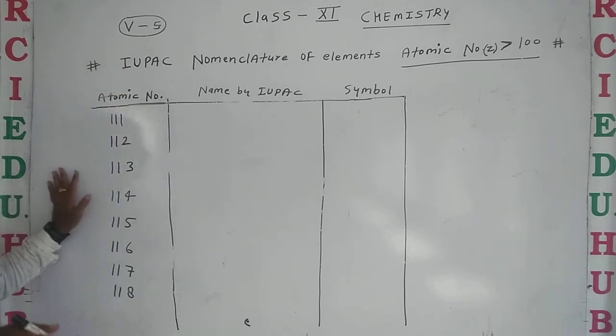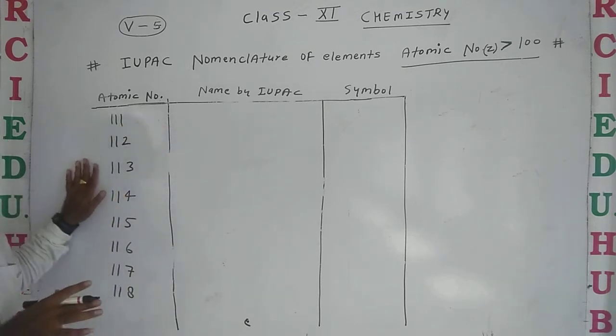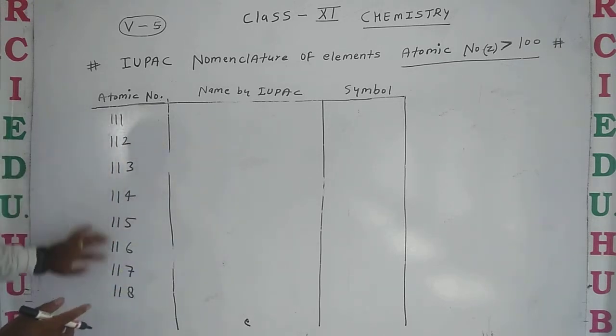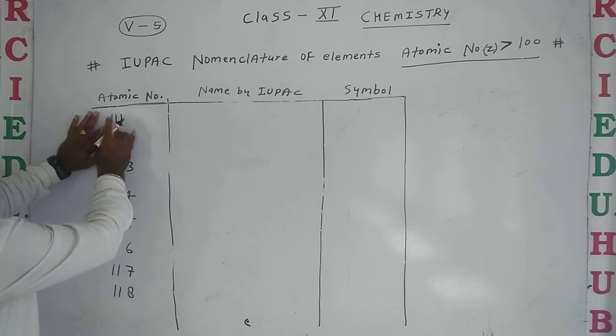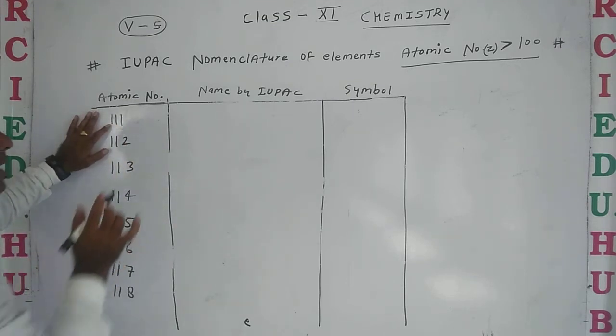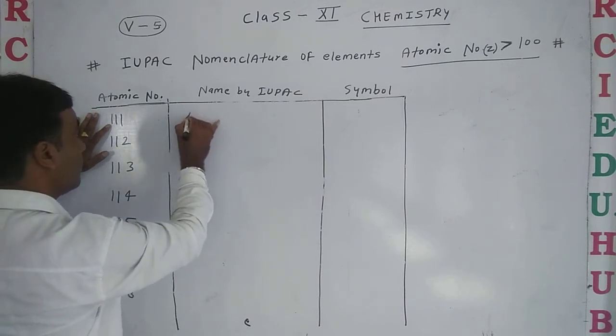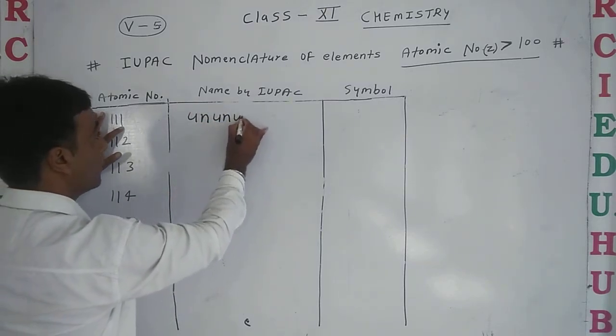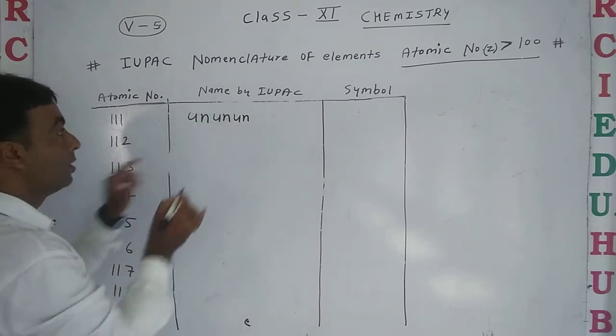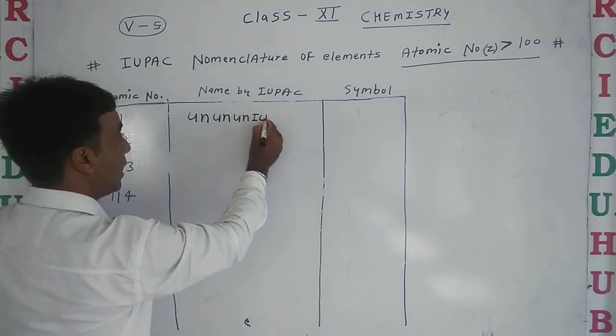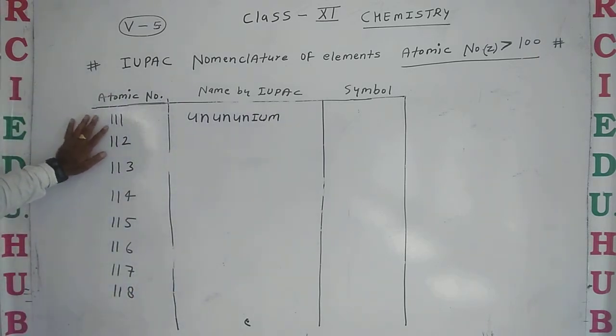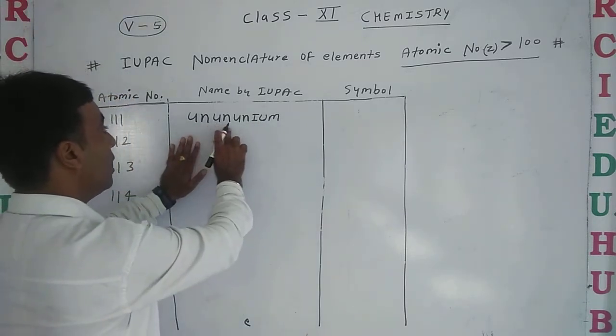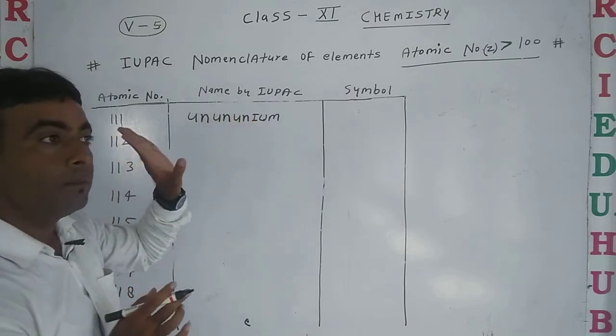We will see what is the name. Same digit naming rules will be same for these elements also. You can see in previous video we use for one that is 'un'. For element 111, we use 'un' 'un' 'un' with correct suffix '-ium'. So the IUPAC name will be unununium.